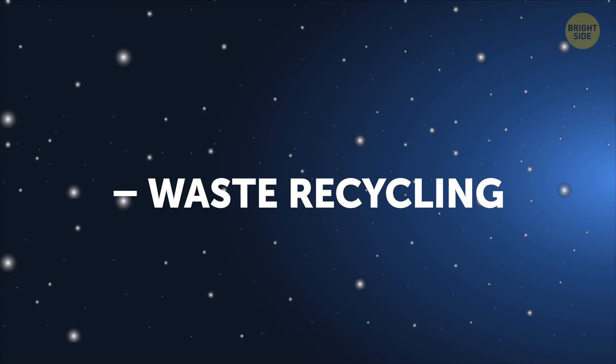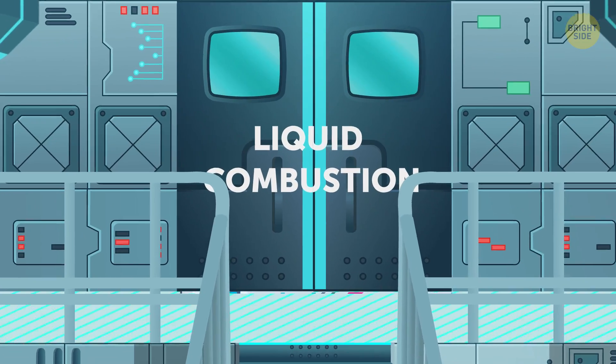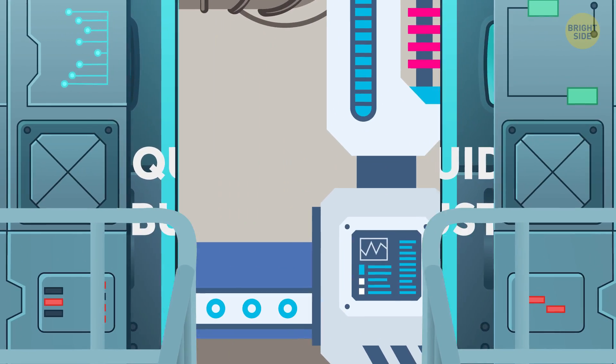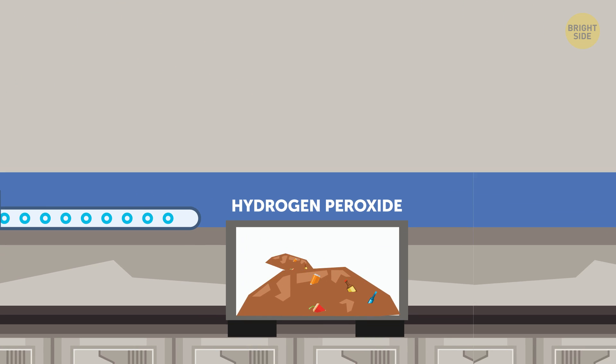The plan is to process all garbage using the liquid combustion system. Simply put, organic and inorganic waste would be collected, crushed, and mixed with hydrogen peroxide.